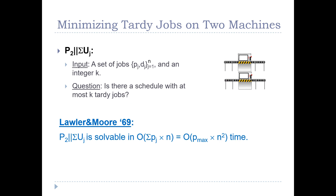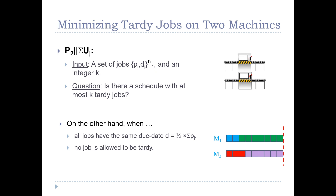Lawler and Moore showed in the late 1960s that this problem can be solved using dynamic programming in O(sigma_pj * n) time — that is, total processing time times the number of jobs. Writing p_max for the maximum processing time, this is also O(p_max * n^2). Despite being from the late 60s, this is currently the best known algorithm for P2|sigma|Uj.